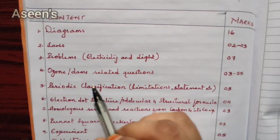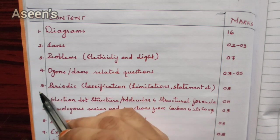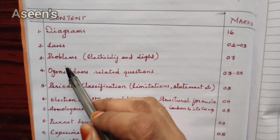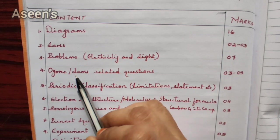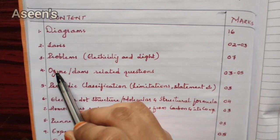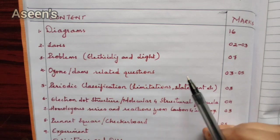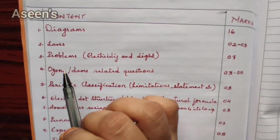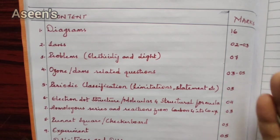Next are questions related to ozone and dams. From the chapter 'Our Environment,' the entire portion has been deducted except the ozone part, so there will definitely be a question related to this. Dam-related questions come from the last chapter on sustainable natural resources. They might give a choice between both or ask two-mark and one-mark questions. A total of three to five marks are guaranteed from these two topics. We are using three marks conservatively in our calculation.